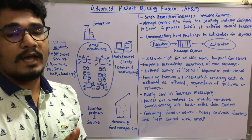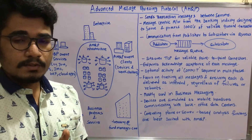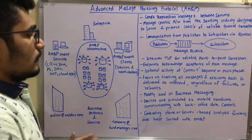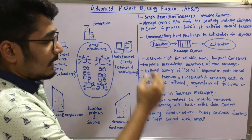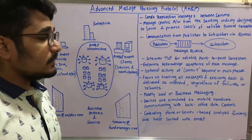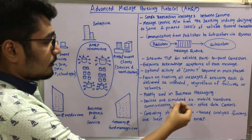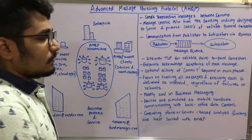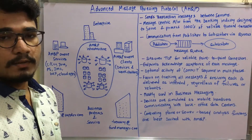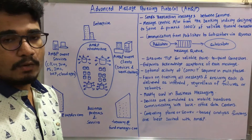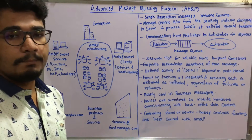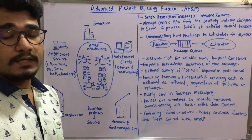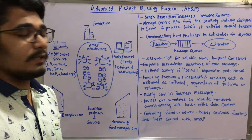AMQP focuses mainly on tracking all messages and ensuring each is delivered as intended, regardless of failures, reboots, system downtime, power shutdowns, or any other activities which occur in banking on a day-to-day basis.